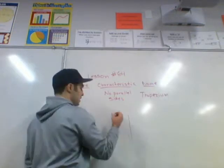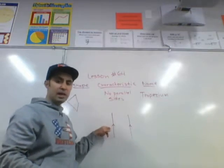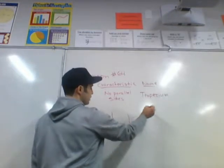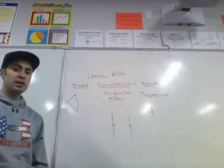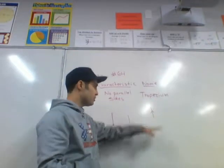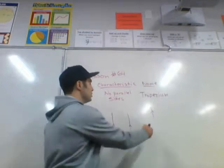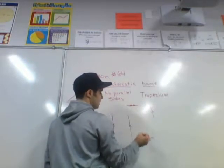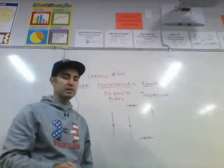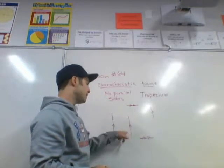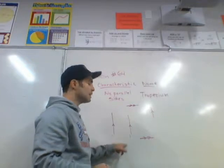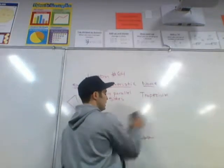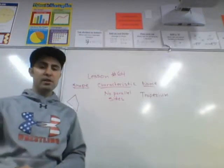The way parallel lines are represented is by these little chevrons. A chevron means that any line with one chevron is parallel with another line that has one chevron. If another pair of lines had two chevrons, that means those two lines are parallel with each other, but not parallel with the single-chevron lines. The trapezium has no parallel sides, so we don't put any chevrons on it.